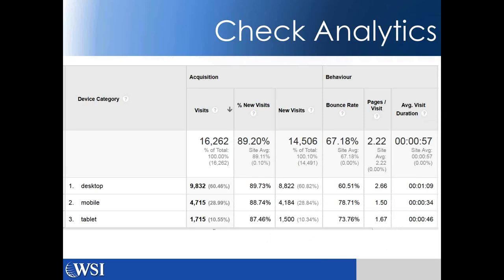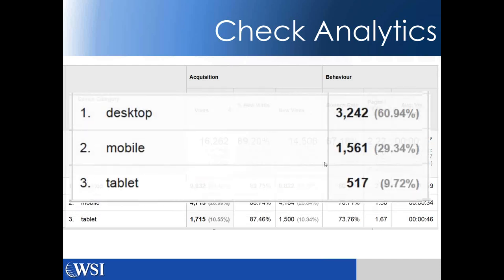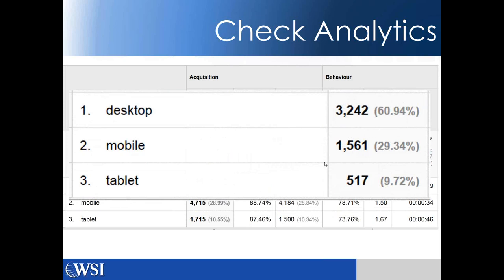There are a few things you can do to understand how people are accessing your website. If you are using any type of analytical tool to track and measure who comes to your website, how they got there, where they went, and where they left, you could find out how many people are coming through a mobile device. In this particular example, you can see that 29.34% of all the traffic that came to this website in the last 30 days came from a mobile device.